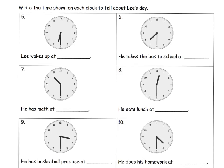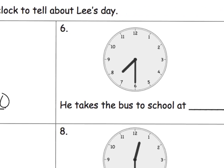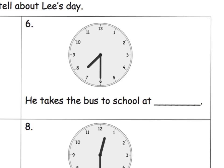Now the scaffolding is removed and students look at the clock to tell time. Lee wakes up at what time? The minute hand is down at the 6 — that's half past, at the 30 — and the hour hand is a little past the 6 but not to the 7. So it is 6:30. He takes the bus at what time? The minute hand is halfway around, so it's something-30. The hour hand is past the 7 but not quite to the 8. So it is 7:30.